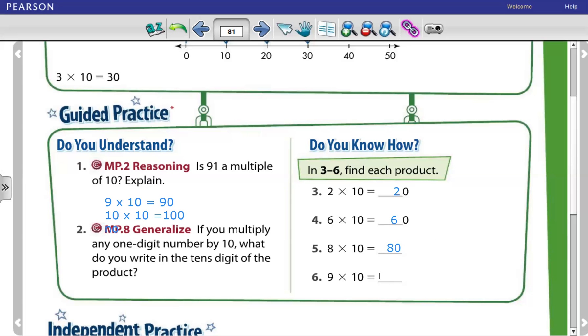Same for question number 6. 9 times 1 equals 9. With the 0, it becomes 90.